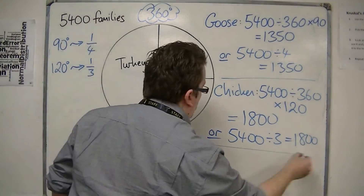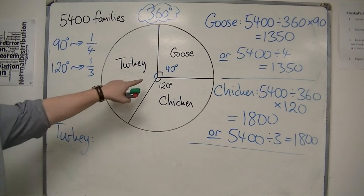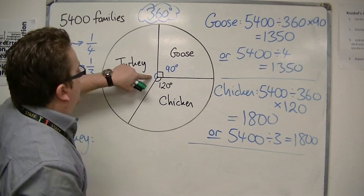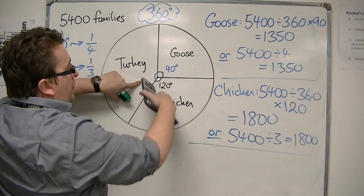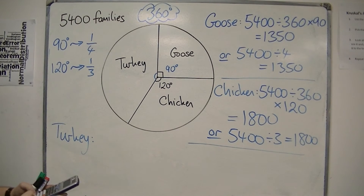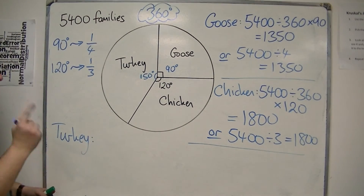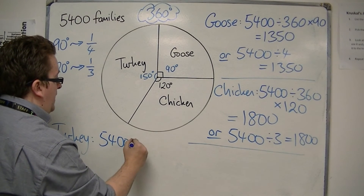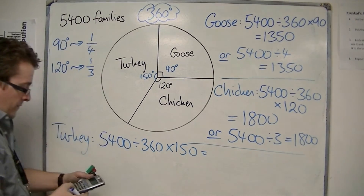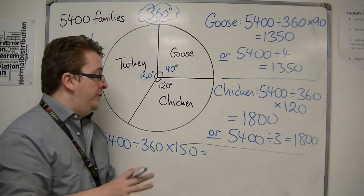Lastly, we want to work out how many went for turkey. We don't have an angle here, but we can work it out: 360 degrees take away 120, take away 90, means we have 150 degrees left. So we do 5,400 split into 360 pieces and multiply by 150. So 5,400 divided by 360 times 150 is 2,250.